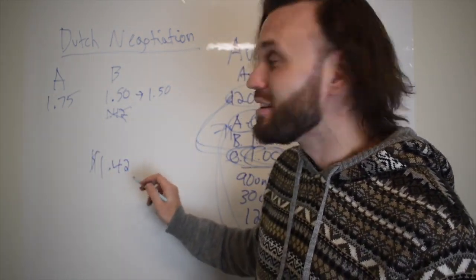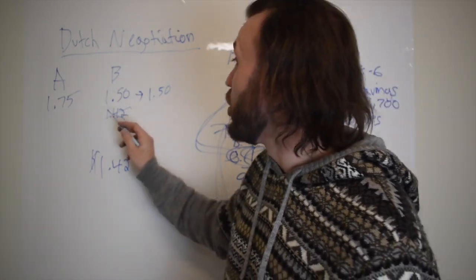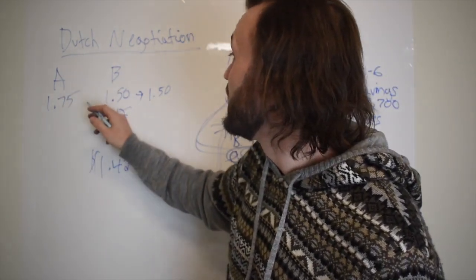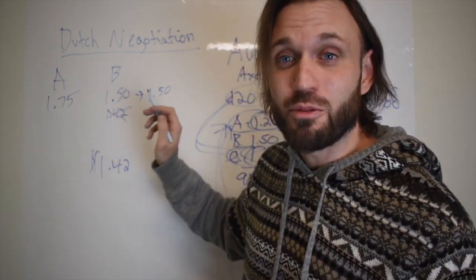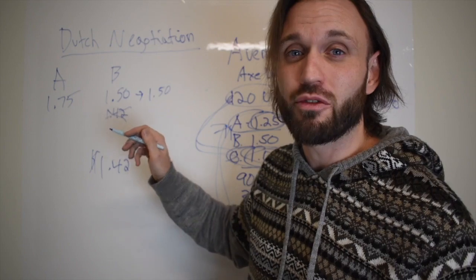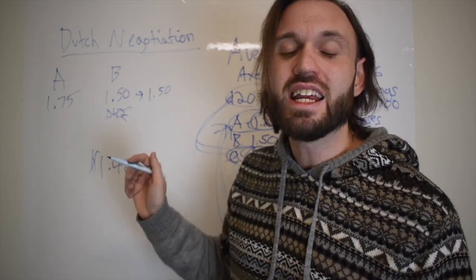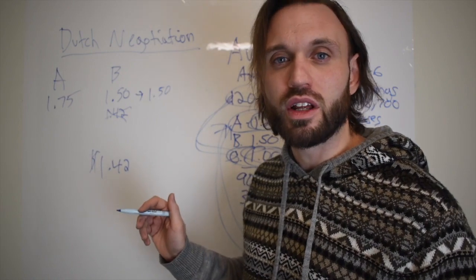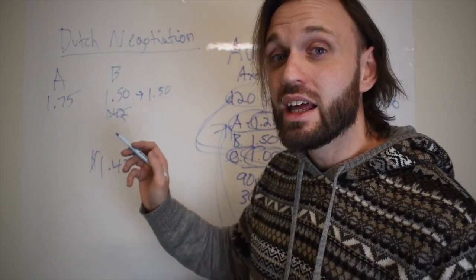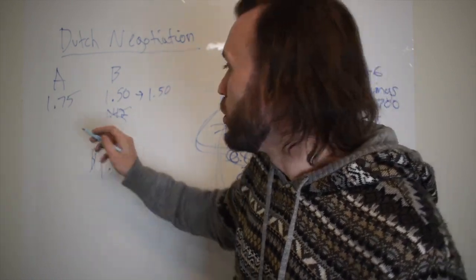So you're going to call distributor A and let them know that, hey, distributor B has this product—your competitor has this product for $1.50. I need it for $1.42. Can you give it to me for $1.42? And distributor A, they may say no, but we can give it to you for $1.45.